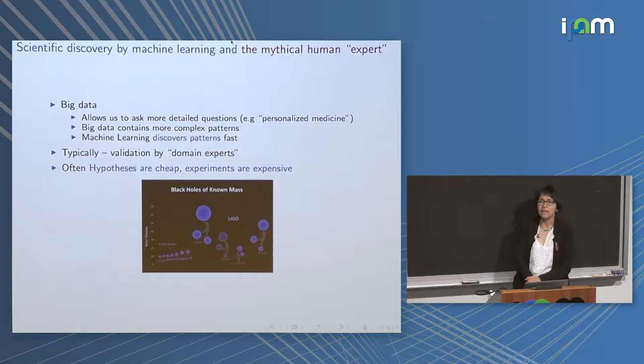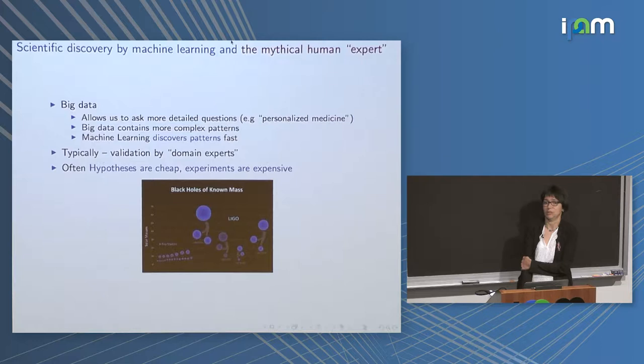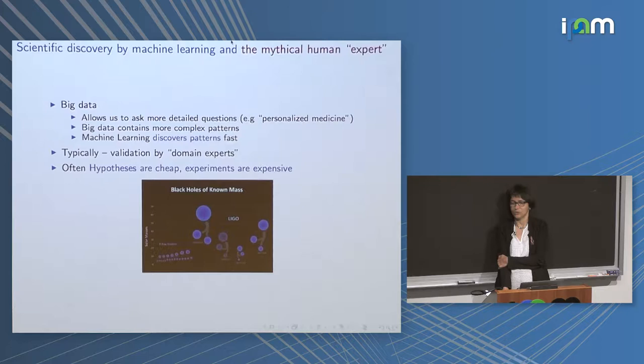We as machine learners think there is a lot of data, but this data is very expensive — somebody has paid for it. Validation is also not cheap; in the sciences, validation takes years of PhD research time. Here is an extreme example of how expensive validation can be compared to theory.